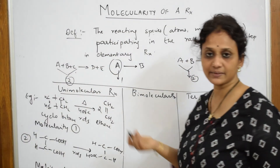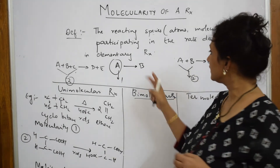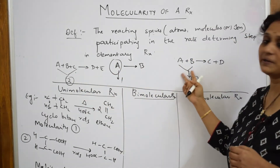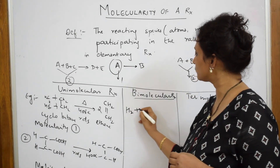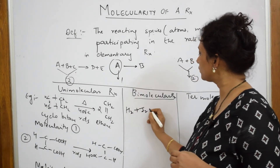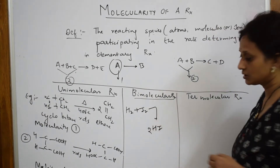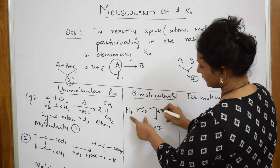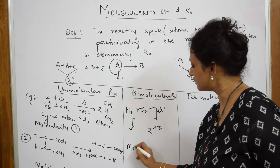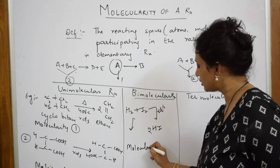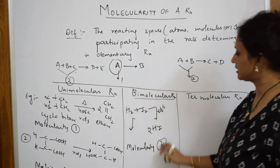Now let us come back to bimolecular reactions. Bimolecular means there are two reactants participating in the RDS. Pick up the basic example: H2 plus I2 giving HI. How many are participating in the RDS? Two. So the molecularity of this reaction is two — that is why it is called bimolecular.